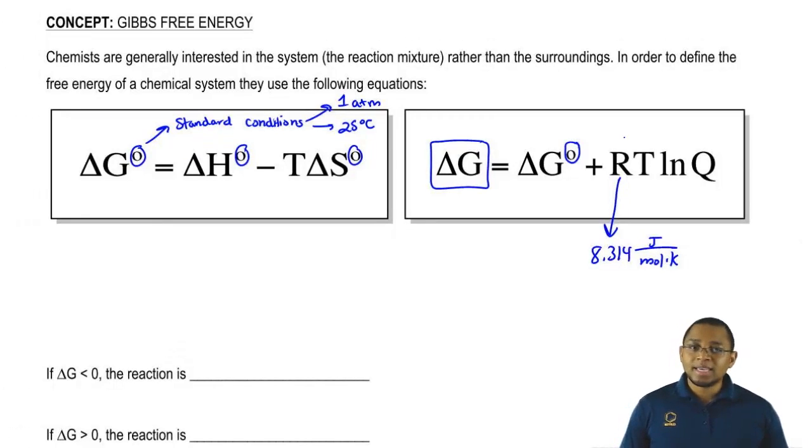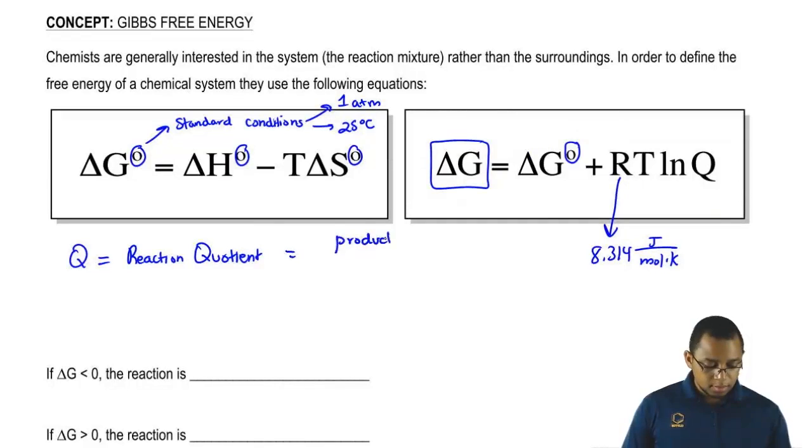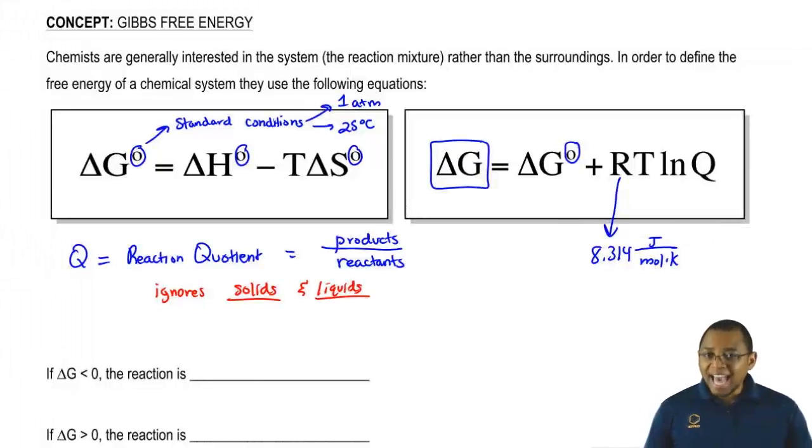T is our temperature in Kelvin. Q is known as our reaction quotient. Our reaction quotient is just products over reactants. When it comes to Q, it ignores two states of matter: it ignores solids and liquids. If it's a solid or liquid, it ignores it. If it's aqueous or gas, it will look at them.